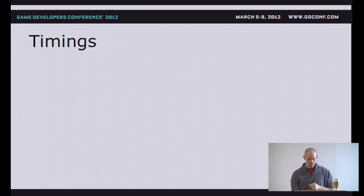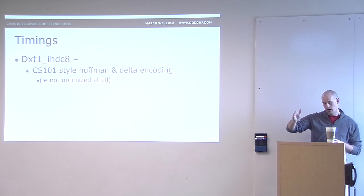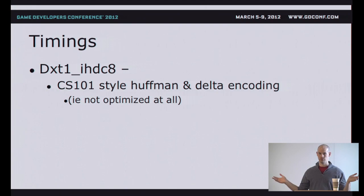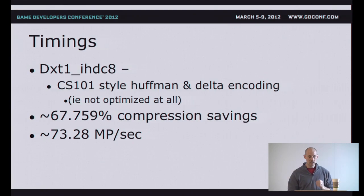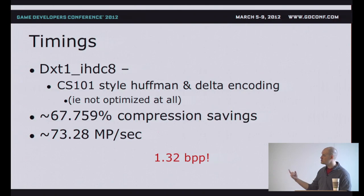Now let's talk about speed — the third corner of the triangle. Using deinterleaving, Huffman-style delta encoding of codebooks, with 8x8 blocks and CS101-level Huffman and delta encoding — nothing specially optimized — with about 67.8% savings, I was getting about 73 megapixels per second on a single core. On two cores that's 114 megapixels per second. That's 1.32 bits per pixel, compared to DXT's four bits per pixel.